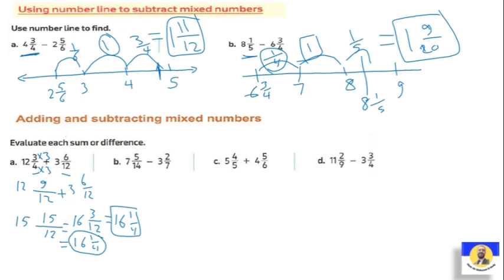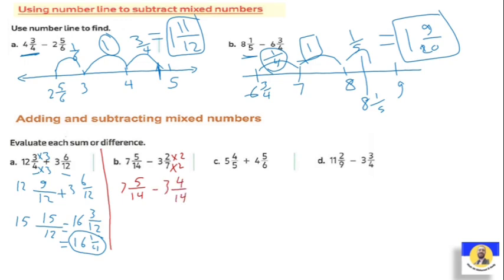Letter b: seven and five over fourteen minus three and two over seven. Since seven divides evenly into fourteen, multiply two over seven by two up and down, giving seven and five over fourteen minus three and four over fourteen. The answer is four and one over fourteen.